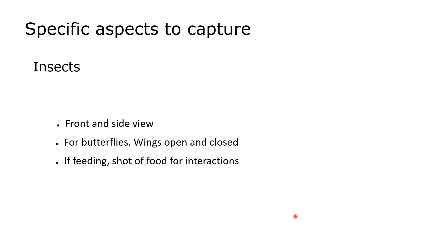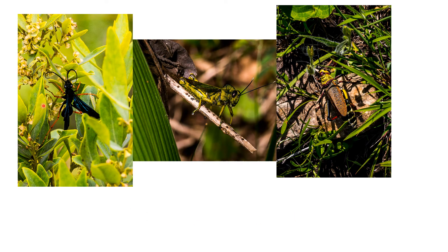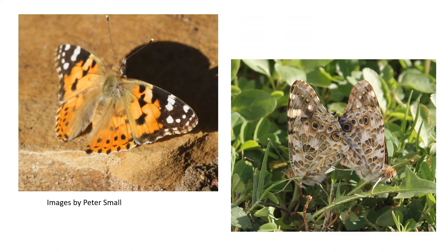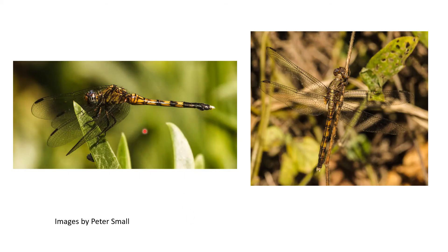As far as insects are concerned, try to get a front and side view. For butterflies, capture wings open and closed, and if feeding, a shot of the food for interactions. Here we have a wasp and a couple of grasshoppers. Wings open and wings closed are shown for the butterflies. There are also further images showing the inside and outside of wings, and a couple of lovely dragonfly shots with enough detail for a positive ID.